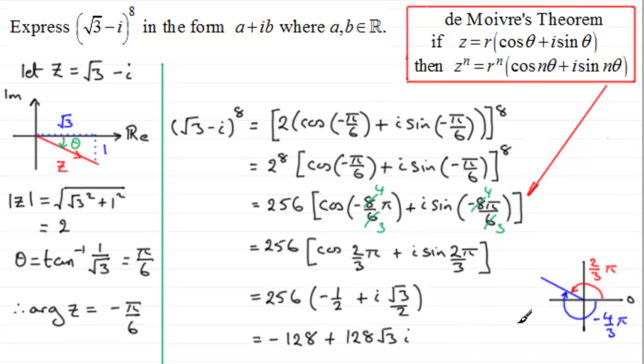So I hope that's given you some idea then on how we can go about doing a question like this. Just take your complex number, put it in mod arg form, as we did here, use De Moivre's theorem, and then from there you should be able to simplify it.